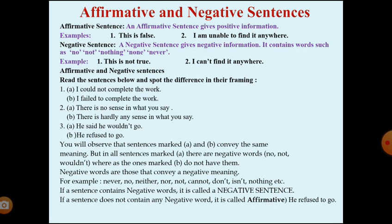First, A: I could not complete the work. B: I failed to complete the work. Second, A: There is no sense in what you say. B: There is hardly any sense in what you say. Third, A: He said he wouldn't go. B: He refused to go. So you can see the difference in the A and B sentences.